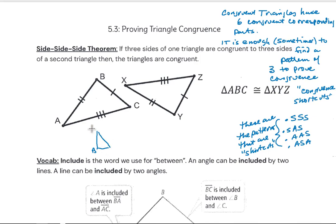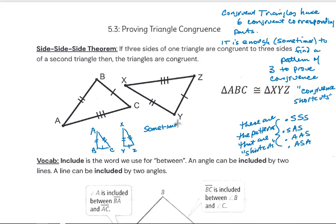Angle-Angle-Angle only guarantees that the two triangles are similar, meaning one could be a scaled-down version of the other — they have the same shape but not necessarily the same size. And Side-Side-Angle only works for right triangles, and we call it hypotenuse-leg.